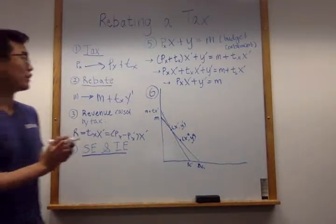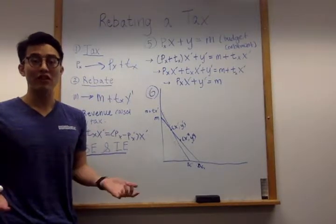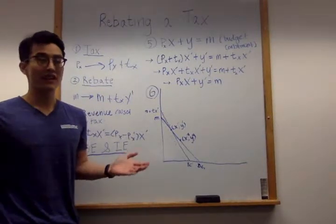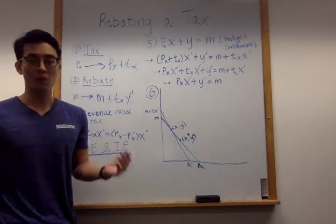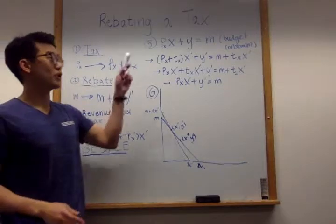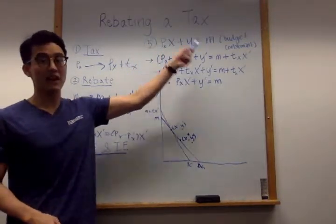So if we look at this example, let's assume that Y refers to the expenditure on all other goods other than good X, and let's also assume that the price of all other goods is 1. Then we get the budget constraint equation that's PX times X plus Y equals M.